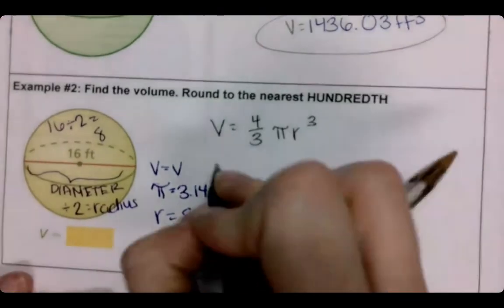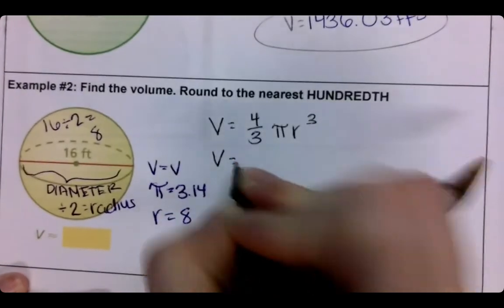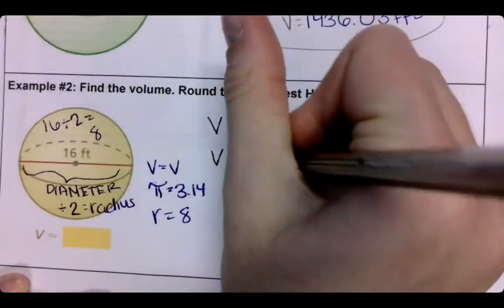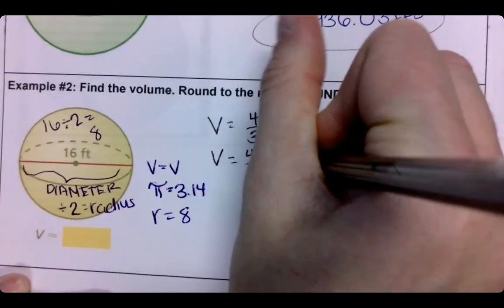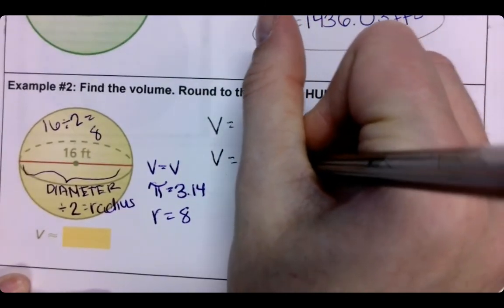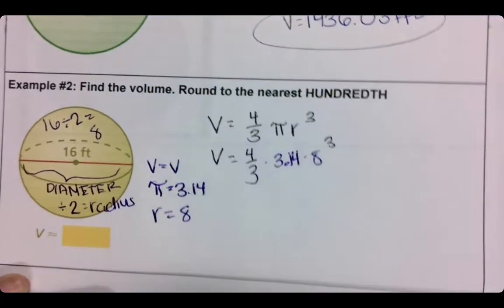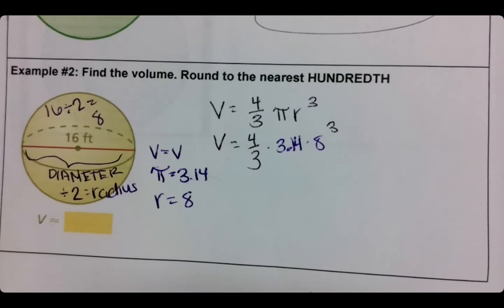So now let's plug and chug. V equals, keep your 4/3. π, we're going to use 3.14. And my radius is 8, and that is to the third power. So plug that all into the calculator and see what you get. Let's see if we get the same answer.